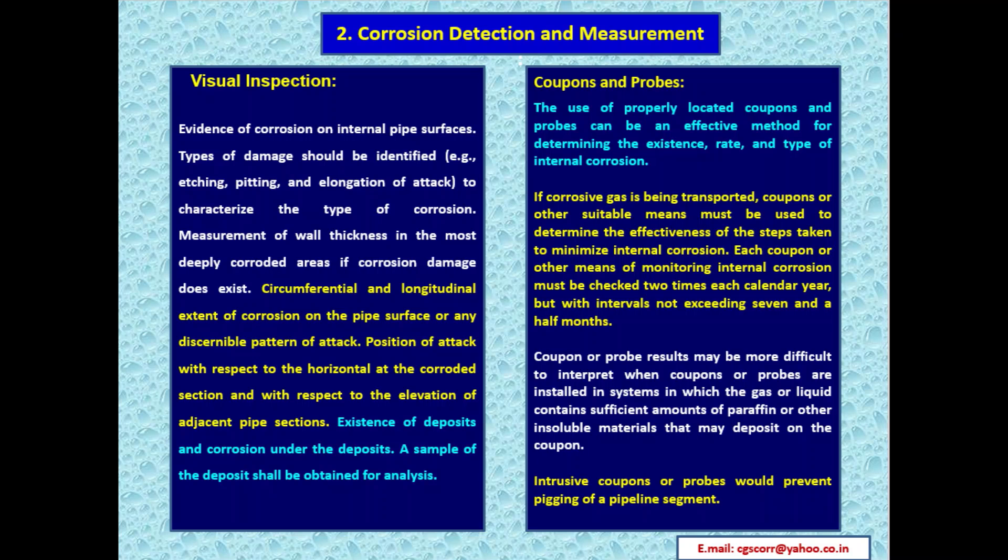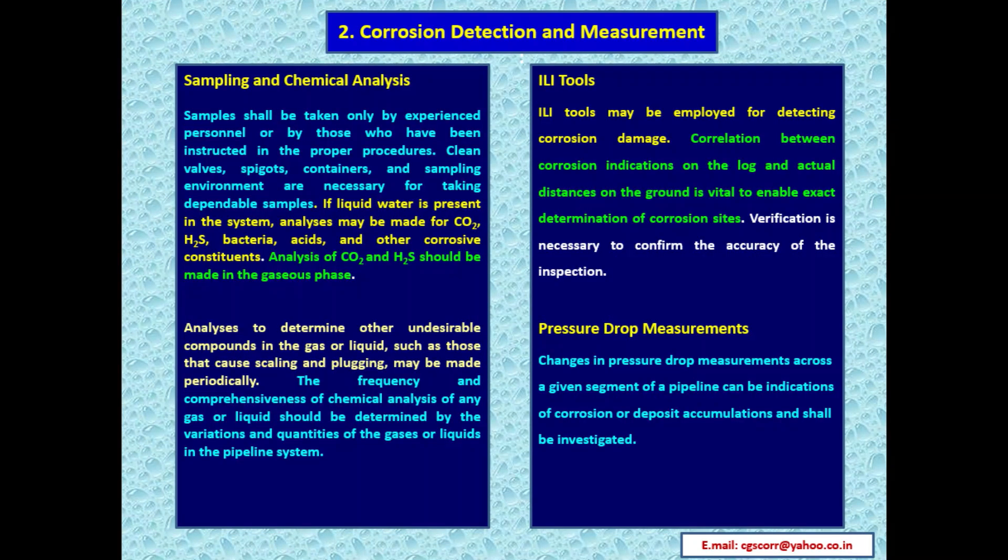Sampling and chemical analysis: samples shall be taken only by experienced personnel or those instructed in proper procedures. Clean valves, spigots, containers, and a clean sampling environment are necessary for dependable samples. If liquid water is present, analysis may be made for carbon dioxide, hydrogen sulfide, bacteria, acids, and other corrosive constituents. Analysis of CO2 and H2S should be made in the gaseous phase. The frequency and comprehensiveness of chemical analysis should be determined by the variations and quantities of gases or liquids in the pipeline system.